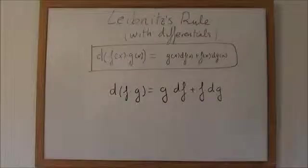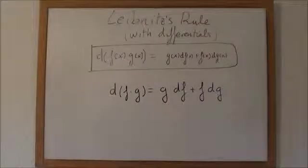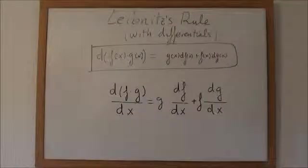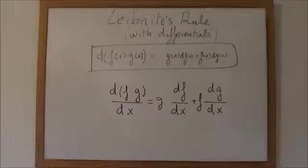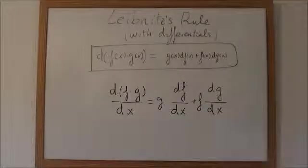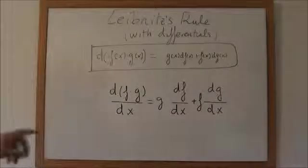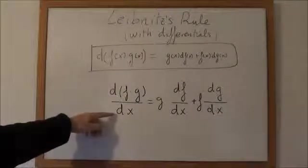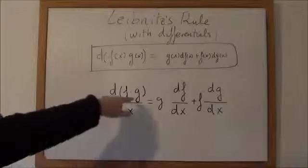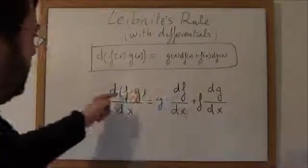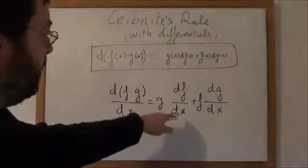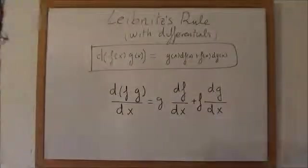If we divide both sides by differential of x, we get the Leibniz rule for derivative of functions. Because differential of a function divided by differential of x is the derivative of that function. So, this is the derivative of f times g, this is the derivative of f, and this is the derivative of g.